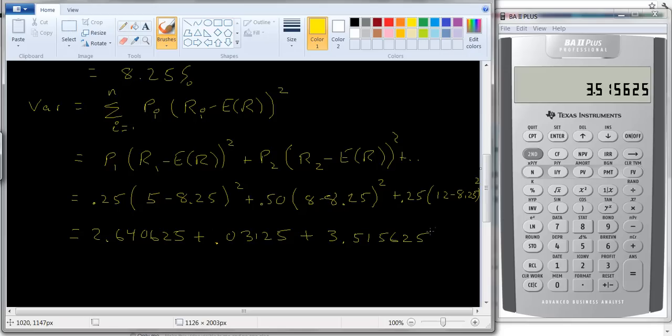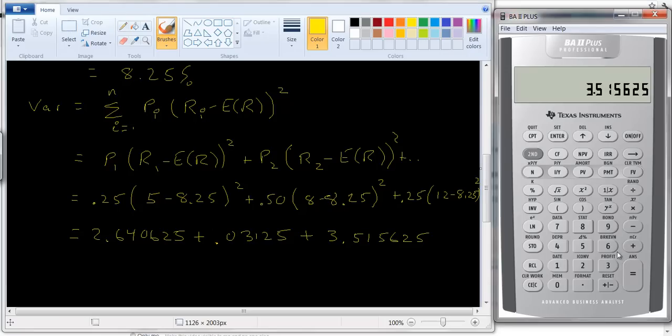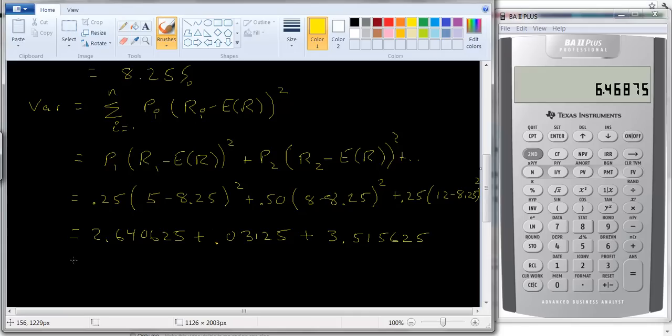Let's add those numbers together: 0.03125 plus 2.640625 plus 3.515625, and we get 6.46875.